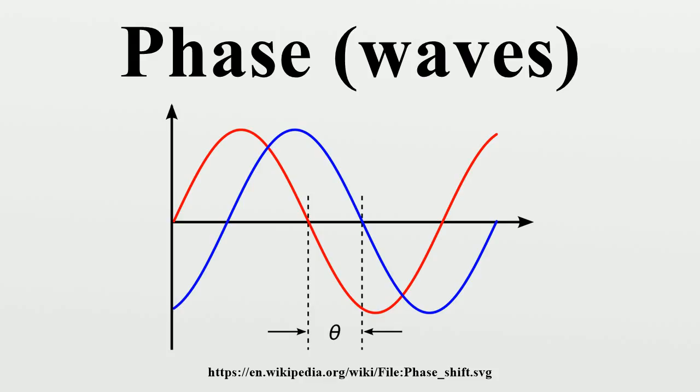Formula: The phase of an oscillation or wave refers to a sinusoidal function, such as the following, where constant parameters are called the amplitude, frequency, and phase of the sinusoid. These functions are periodic with period, and they are identical except for a displacement along the axis.